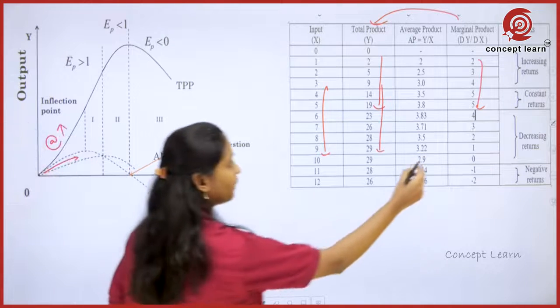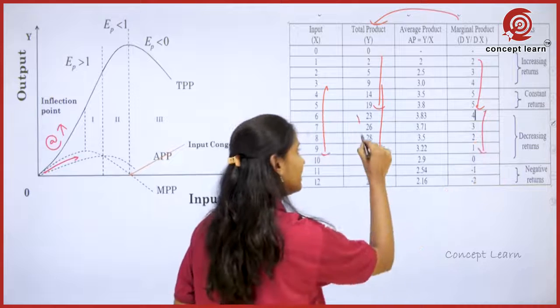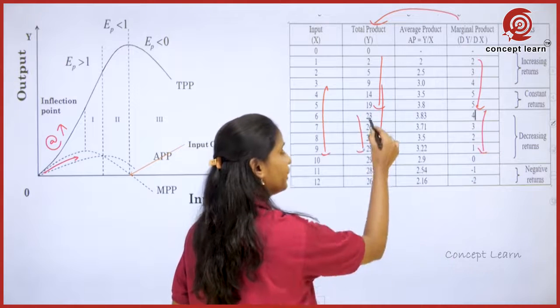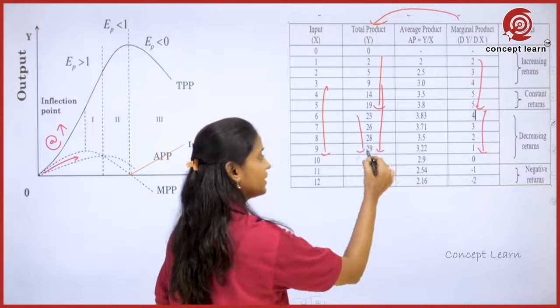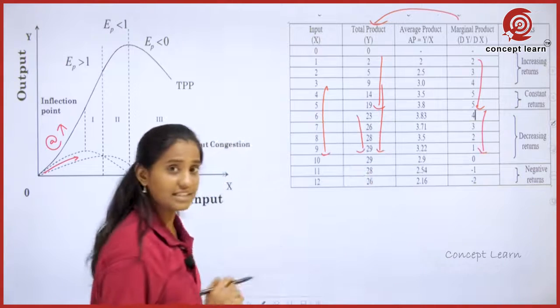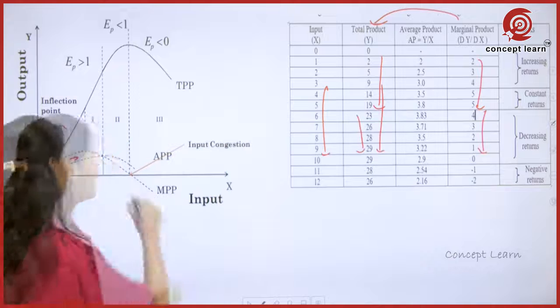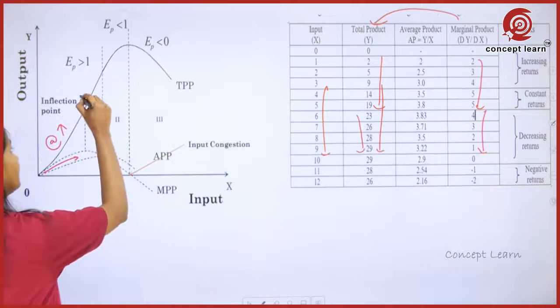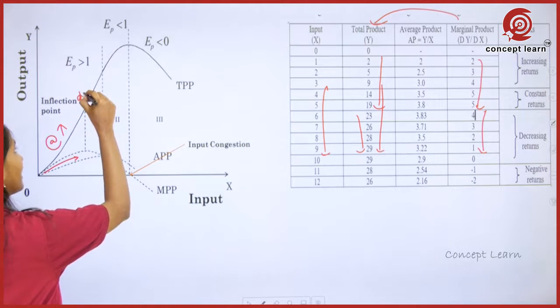But when MPP is decreasing, TPP still increases — for example: 23, 26, 28, 29 — it is still increasing, but at a decreasing or diminishing rate.